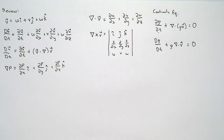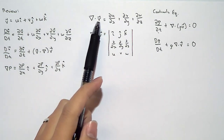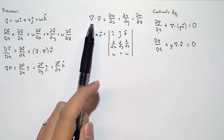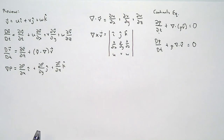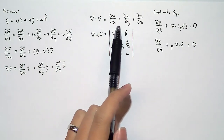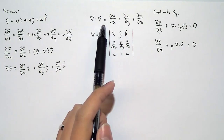If our fluid is incompressible — it doesn't compress, it doesn't expand or contract — and if a flow is incompressible, then what does the dilatation rate have to equal? Zero, because the dilatation rate tells us how much the fluid is expanding or contracting. So the dilatation rate has to be zero if the flow is incompressible.